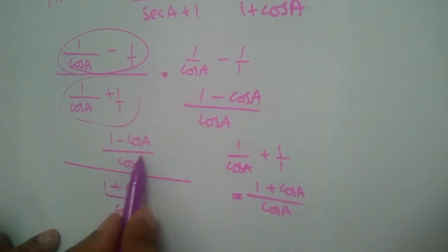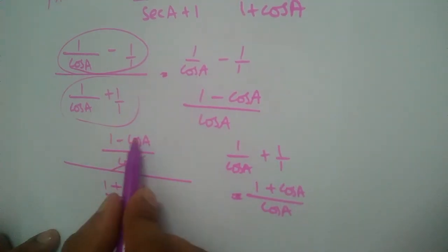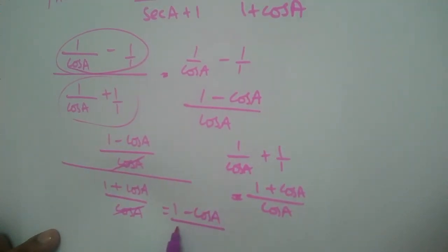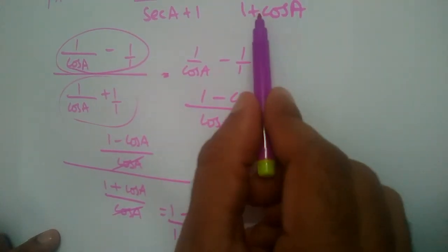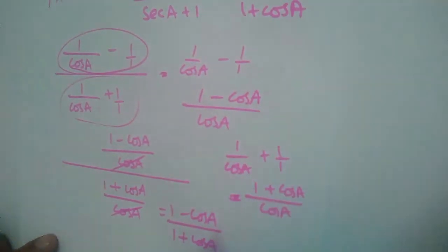The cos a terms cancel, and what we have is (1 - cos a) divided by (1 + cos a). This is exactly what we needed to prove.